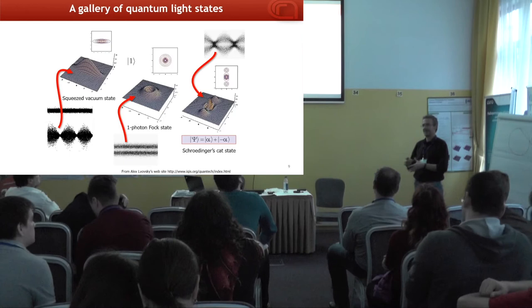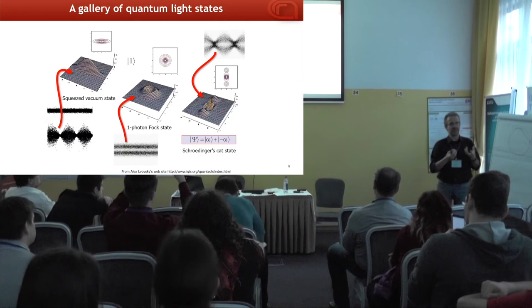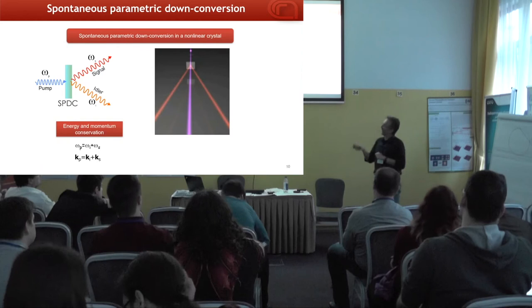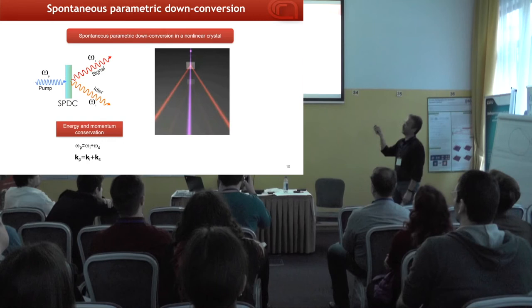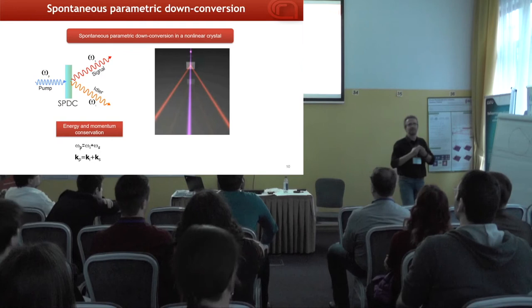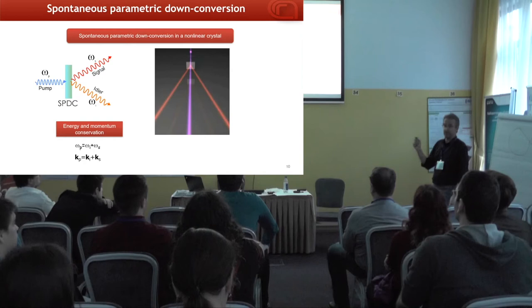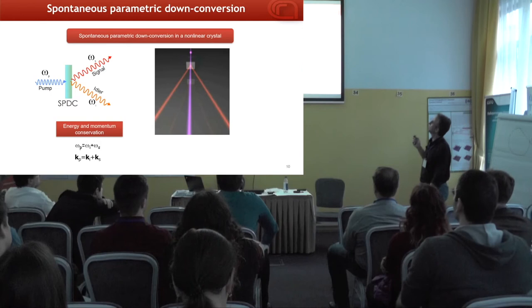Our main tool is parametric down-conversion. We start from violet/blue pulses of high energy, put them through a nonlinear crystal, and from time to time a down-conversion event occurs where one single blue photon splits into two, conserving energy and momentum. Whenever you see a single photon in one output arm (idler), there is also a single photon in the other arm (signal). This can be used to generate single photons in a conditional way.